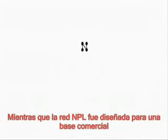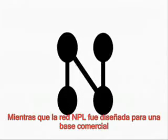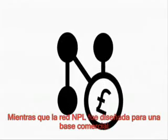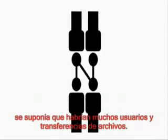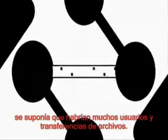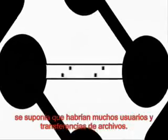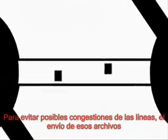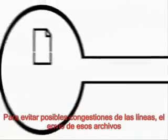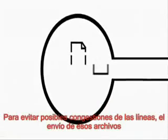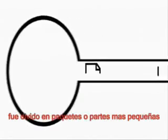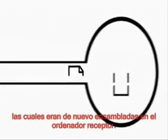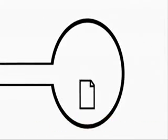Let's take a short detour to England. Since the NPL network was designed on a commercial basis, a lot of users and file transfers were expected. In order to avoid congestion of the lines, the sent files were divided into smaller packets, which were then put together again at the receiver.